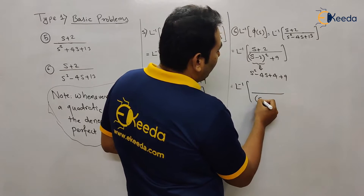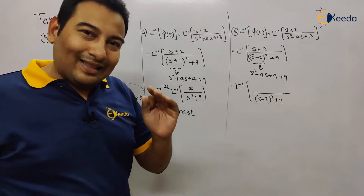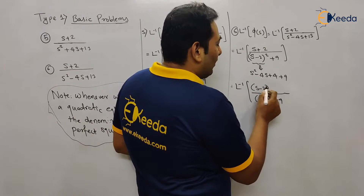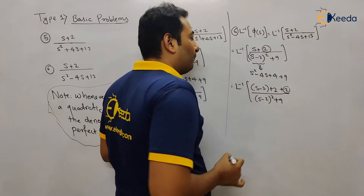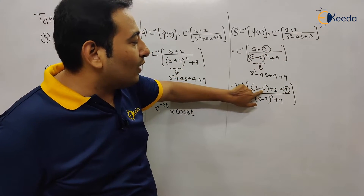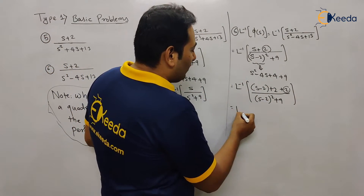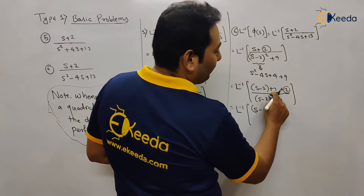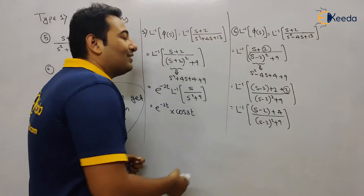We're going to convert the numerator according to the denominator. In the denominator we have (s−2), therefore in the numerator we also make it (s−2). If it is −2, you need to add +2 as adjustment — (s−2) and because of the −2, just to nullify the effect, we add +2. In short, this will be Laplace inverse of (s−2+4) upon (s−2)² + 9, since 2+2 = 4.